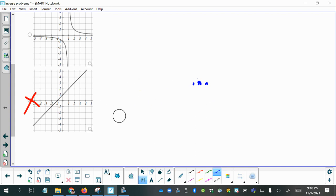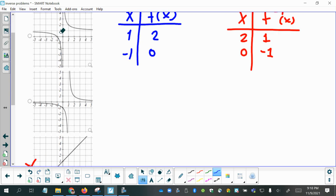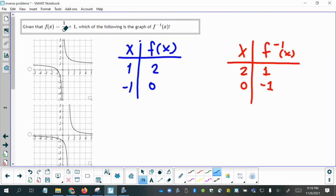We have these two that look like reciprocal functions. 1 over x plus 1, we have 1, 2, and negative 1, 0, then x and f of inverse of x give you 2 and 1, 0 and negative 1. So let's see if we can find the point 2, 1 on either of these graphs.